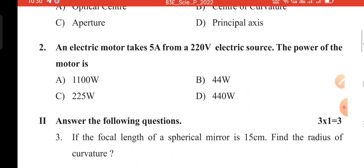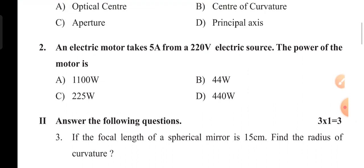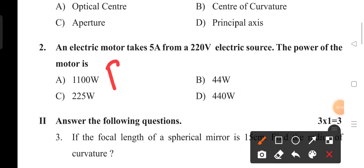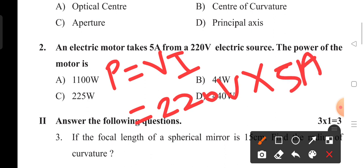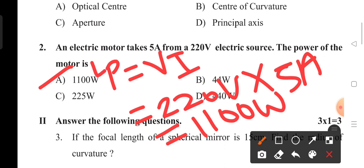Second question: an electric motor takes 5 amperes from a 220 volt electric source. The power of the motor is — this problem is related to power, so we use the formula P = VI. They give V = 220 volts and current = 5 amperes. Then 220 × 5 = 1100 watts. That is option A, the right answer. Remaining all options are wrong.